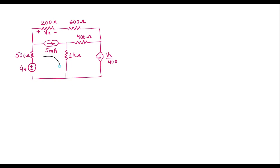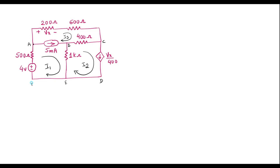I will assume the current through the first loop is I1, the current through the second loop is I2, and the current through the third loop is I3. I will give names to the nodes: A, B, C, D, E, F, G, H.